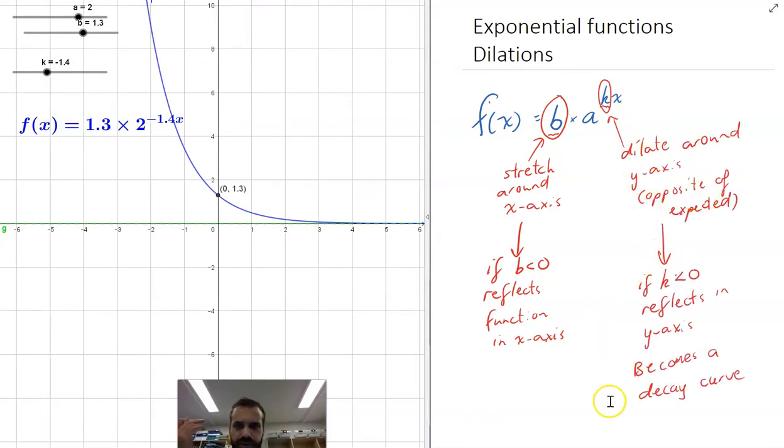And so there's our notes there. k is less than zero, it reflects in the y-axis and becomes a decay curve. All right, there are exponential functions, there are all the transformations we can do to it. It's the same transformation that will happen in any function.